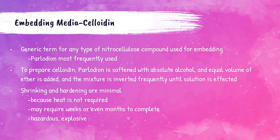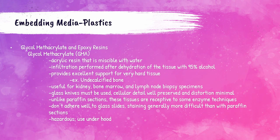Siloidin is a generic term for any type of nitrocellulose compound used for embedding in the histopathology laboratory. The most commonly used is called parlodion, though it is usually used only in research and neuropathology laboratories. To prepare siloidin media, parlodion is softened with absolute alcohol and an equal volume of ether is added; the mixture is then inverted to mix. Heat is not required in any processing steps for siloidin embedding, so shrinkage and hardening of tissue are minimal. However, it takes weeks or even months to complete and is hazardous due to the use of ether.